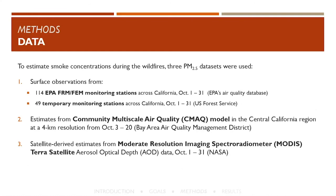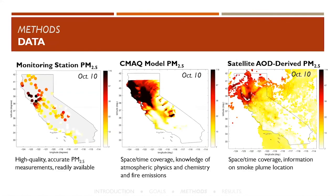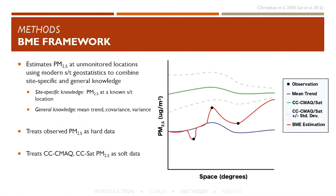The data we used included surface observations from 114 permanent monitoring FRM and FEM stations across California, plus 49 temporary monitoring stations deployed by the U.S. Forest Service during the fire to monitor air quality in unmonitored locations. We also used CMAQ model output at four-kilometer resolution provided by the Bay Area Air Quality Management District, and satellite-derived estimates from MODIS-TERRA AOD data. In the BME framework, observations are hard data — always estimating the observed value at that location — while the corrected CMAQ model and satellite data are treated as soft data, with variance derived from the CAMP correction.